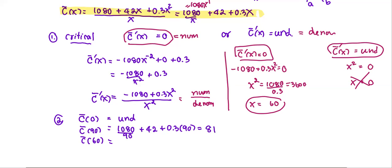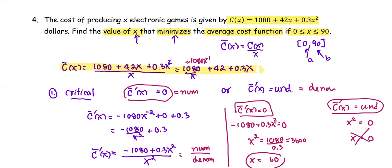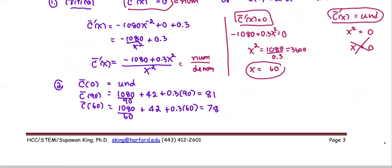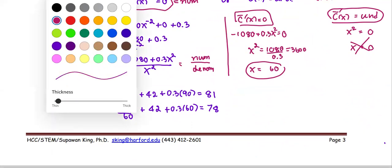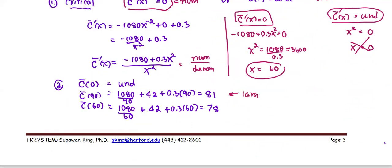At x = 60: C̄(60) = 1080/60 + 42 + 0.3(60) = 78. Now, comparing the values, C̄(90) = 81 is the largest and C̄(60) = 78 is the smallest. Since we're looking for the x that minimizes the average cost function, we take x = 60 as the result.